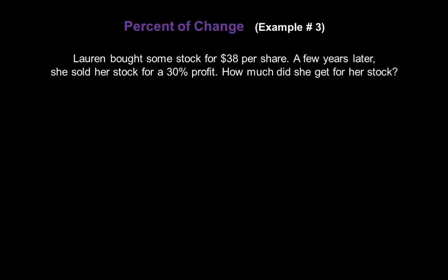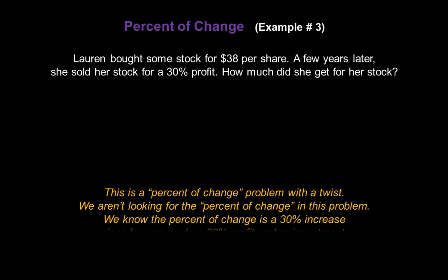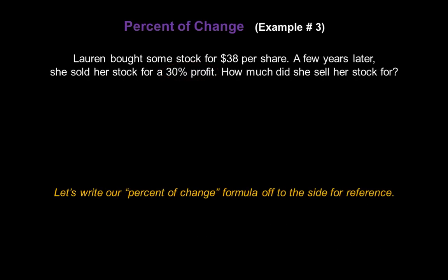Let's look at one more word problem. Lauren bought some stock for $38 per share. A few years later she sold her stock for a 30% profit. How much did she get for her stock? This is a percent of change problem with a twist — we aren't looking for the percent of change; we know it. It's a 30% increase because the problem says Lauren made a 30% profit. Instead, we're looking for one of the other values in our formula. Let's write our percent of change formula off to the side.